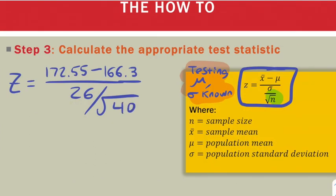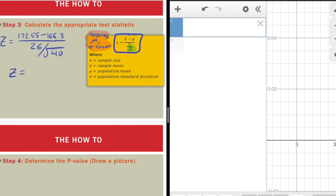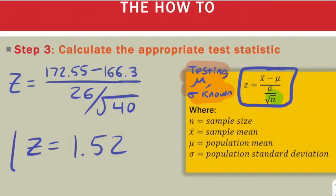And now the formula is ready to calculate. I'm going to type this into decimals. And I get 1.52. And that's my test statistic.